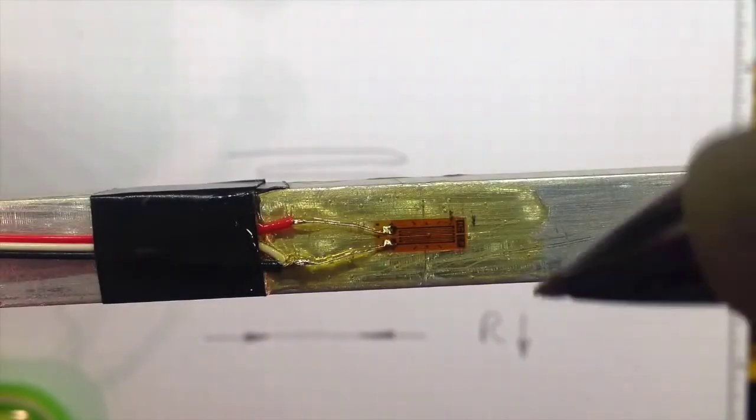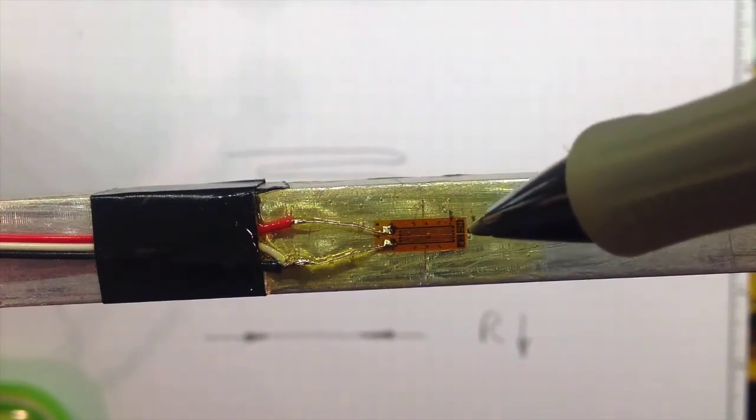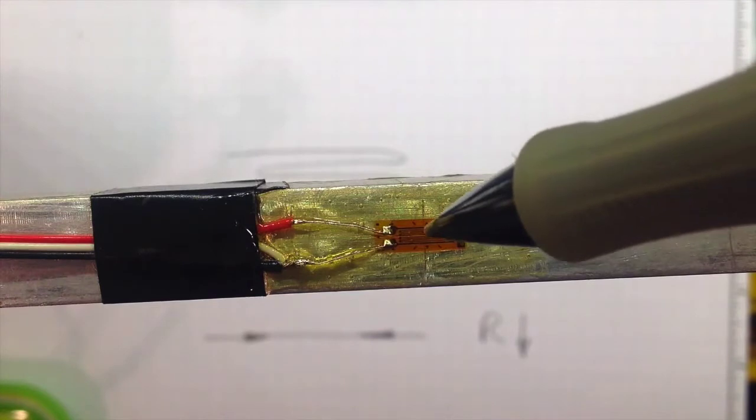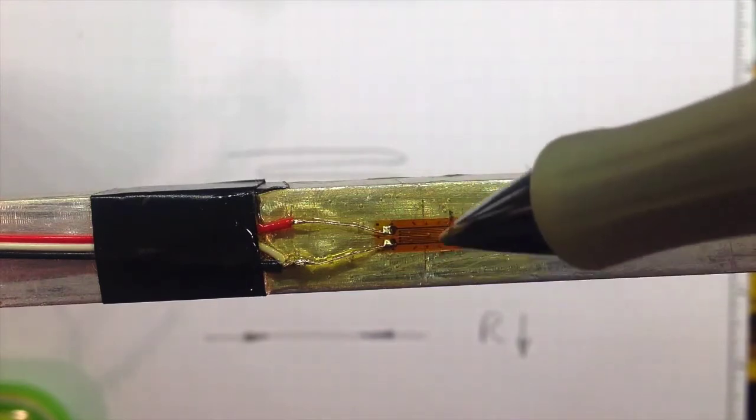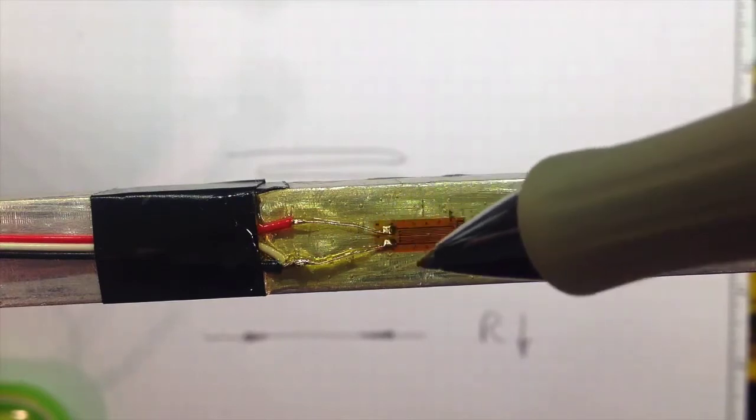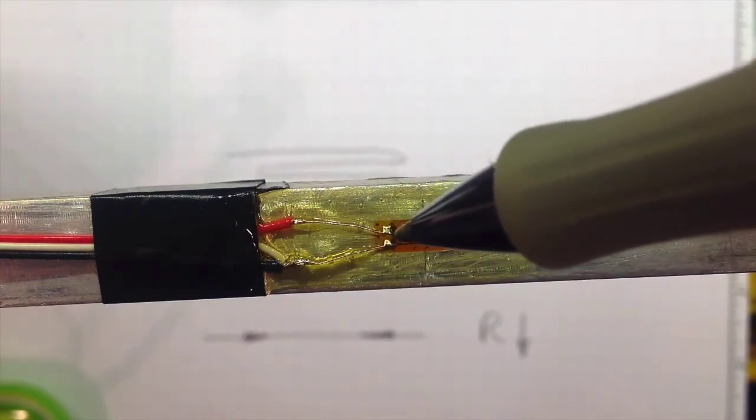If we look really closely we can see that there's a little plastic foil here with copper actually deposited on the foil in a zig-zag pattern and then two wires here connecting that back to our circuit.